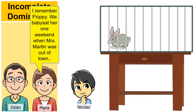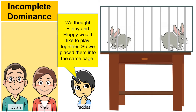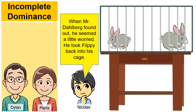'I remember Floppy — we babysat her one weekend when Miss Martin was out of town.' 'Well, Mr. Dahlberg also has a class bunny. His name is Flippy. We thought Flippy and Floppy would like to play together, so we placed them in the same cage. She and he got along so well they played all day long, crawling and climbing on top of each other. When Mr. Dahlberg found out, he seemed a little worried, so he took Flippy back into his cage.'